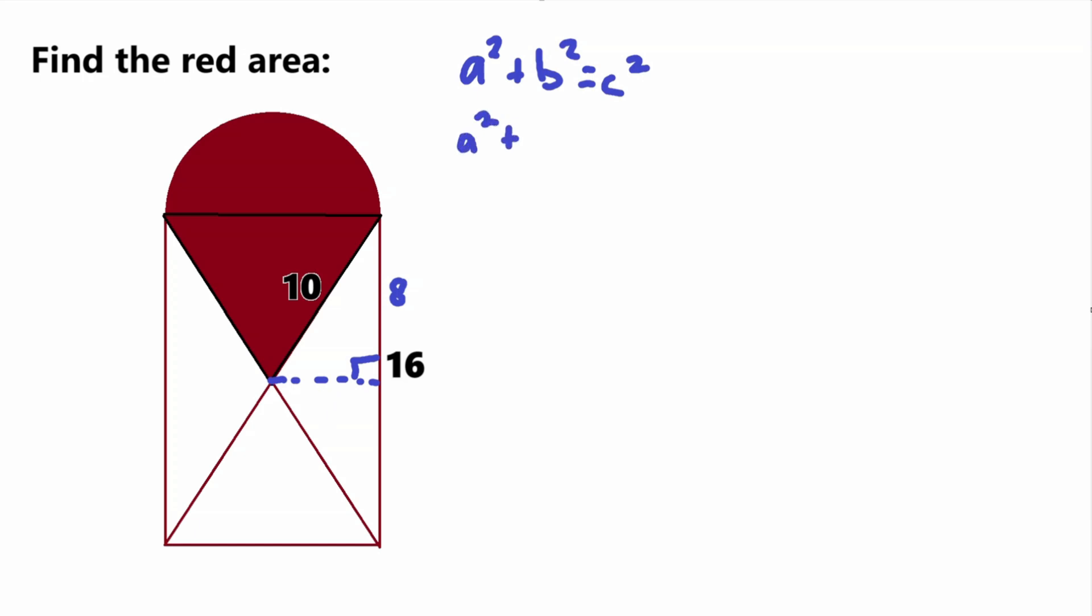So A squared plus B squared, our B is 8 in this case. So 8 squared is equal to C squared, our C is equal to 10, that's our hypotenuse, 10 squared. So A squared plus 64 is equal to 100. Now subtract 64 from both sides. We get that A squared is equal to 36. And then square root of that to get that our A value is equal to 6. 36 squared would normally be plus or minus 6, but since we're working with geometry we can't have a negative number, so our A value is equal to 6.